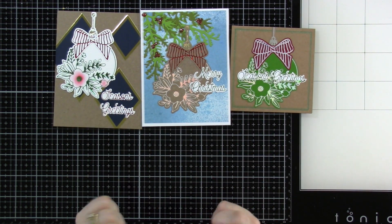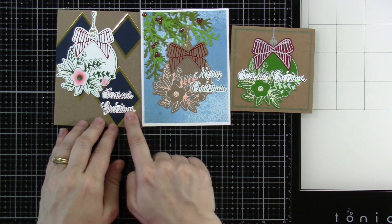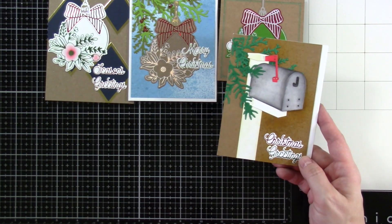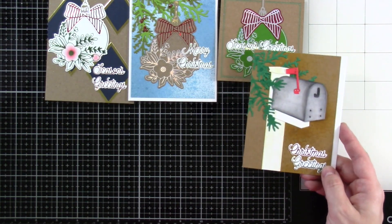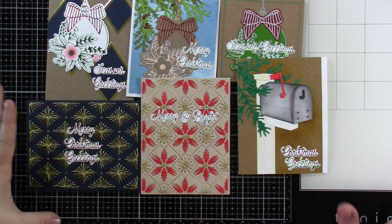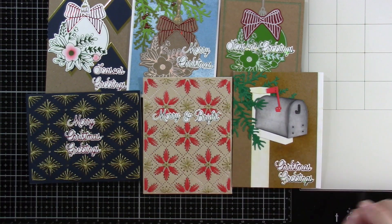And then we also have the Merry Glimmer Sentiments, which I've used on a bunch of these cards. So you've got the Seasoned Greetings, Merry Christmas. I used some Greens and some Reds, Christmas Greetings. And it's great because you can mix and match the sentiments so much. So Merry Christmas Greetings, Merry and Bright. It has a bunch in there. And I Glimmered all of those.